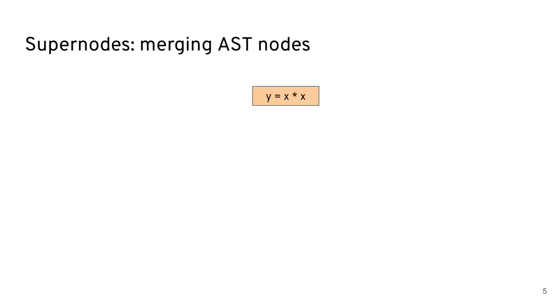And our idea for Truffle-based AST interpreters is super nodes. So merging AST nodes together, roughly based on the idea of super instructions, which is fairly well-known. Gathering bytecode instructions together, but this time adapted to AST interpreters.